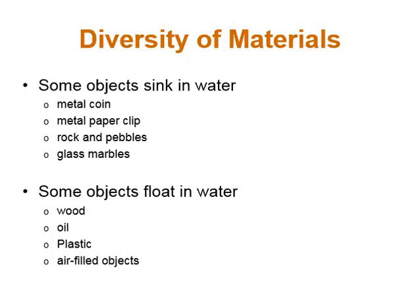Materials can also be classified into two groups: whether they are able to sink in water or whether they are able to float in water. Some examples of materials that sink in water are metal coins, metal paper clips — basically anything made up of only metal will sink. Rocks and pebbles, and glass marbles also sink, and there are a lot of other things that can sink in water.